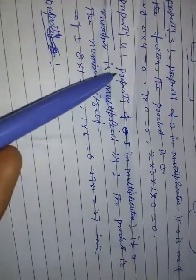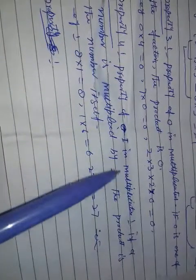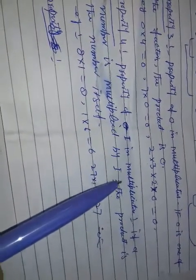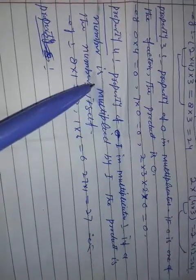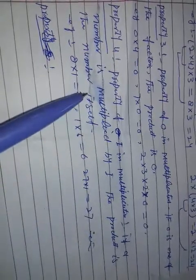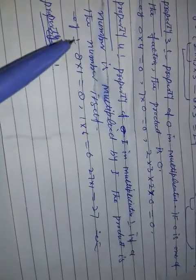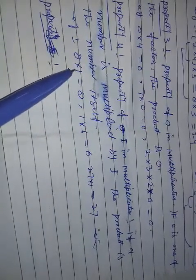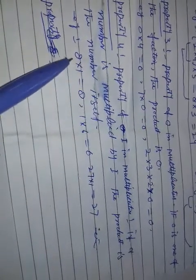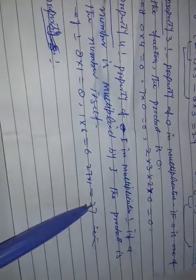Property fourth, property of one in multiplication. If the number is multiplied by one, the product is the number itself. For example, 8 into 1, eight ones are eight. 1 into 6 equals 6. 27 into 1 is 27.